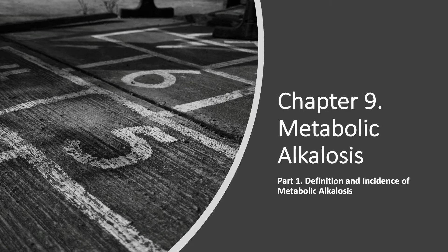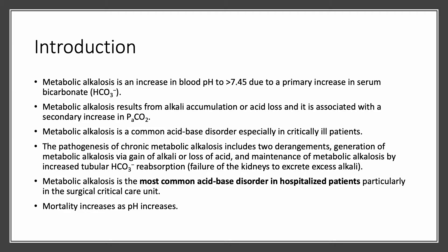Today we are starting chapter 9, which is a new chapter on metabolic alkalosis. Part 1 covers the definition, diagnosis, and incidence of metabolic alkalosis. Metabolic alkalosis is a blood pH over 7.45, due to a primary increase in serum bicarbonate. By contrast, metabolic acidosis is a primary decrease in serum bicarbonate. In metabolic alkalosis, we have a primary increase.